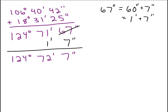But now I've got 72, which is also 60 or bigger, so I could do the same thing. That's the same thing as 60 minutes and 12 minutes, but 60 minutes is 1 degree.